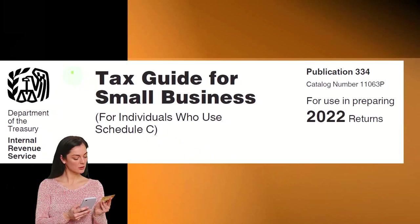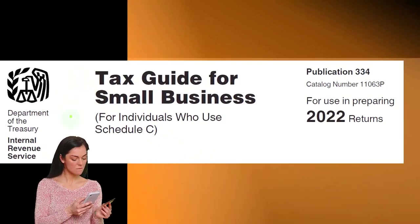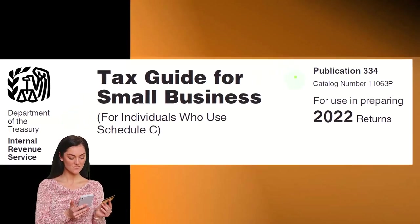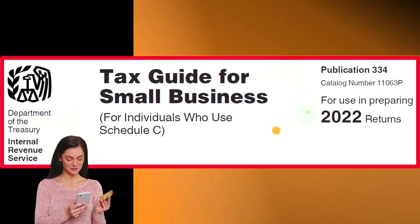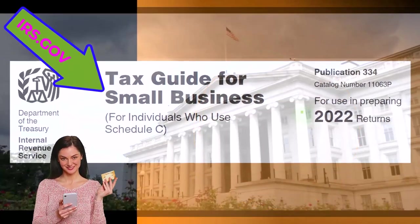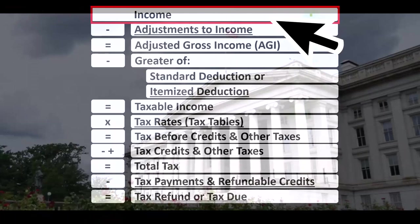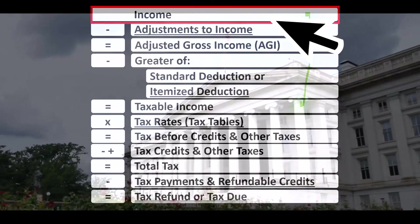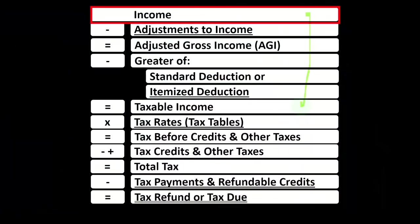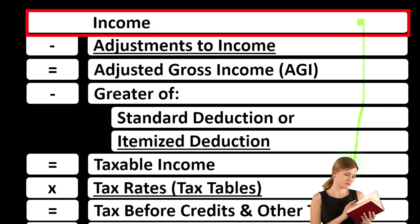Most of this information comes from the Tax Guide for Small Business for individuals who use Schedule C, Publication 334, tax year 2022. You can find it on the IRS website, irs.gov. Looking at the income tax formula, we're focused on line one income. Remember, the first half of the income tax formula is in essence an income statement, but just an outline scaffolding with other forms and schedules flowing into these line items — one of those being Schedule C.